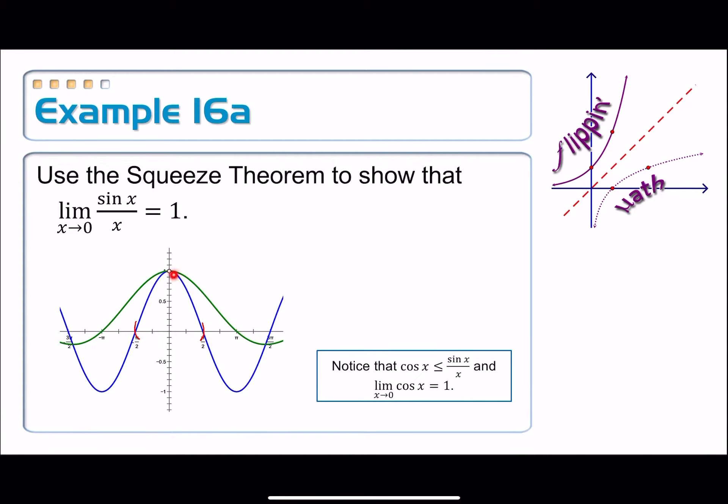Cosine is a continuous function. So I can just directly substitute it in there. I get the y value as 1. It's good to go. All right. So the bottom part is taken care of.